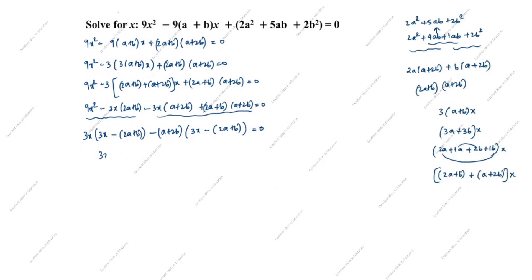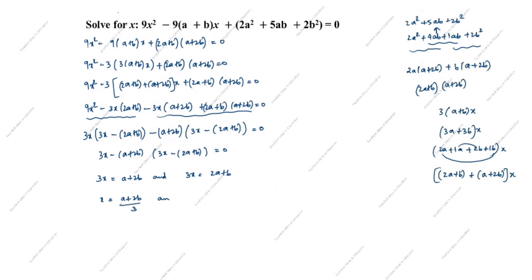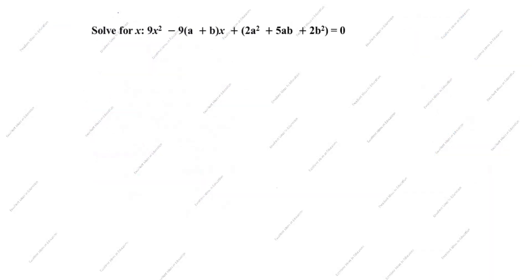Setting each factor to zero: 3x = 2a+b gives x = (2a+b)/3. And 3x = a+2b gives x = (a+2b)/3. These are the two solutions. This is the first method. Now we will see the second method.